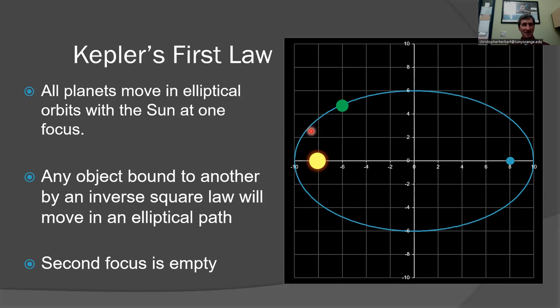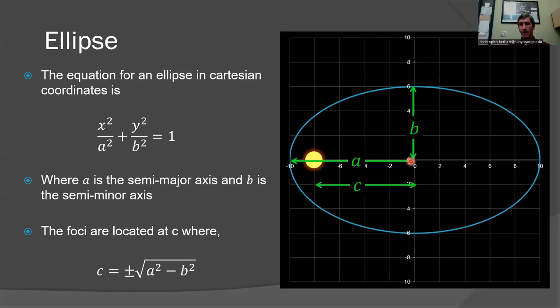So looking at an ellipse, if we break down an ellipse, A represents the semi-major axis. The major axis goes all the way from here to here, but this is the semi - it's half that major axis of A, the semi-major axis. B is the semi-minor axis. If we want to use an equation to describe an ellipse, we can use this equation right here, where we have X squared divided by A squared plus Y squared over B squared is equal to 1. That is the equation for ellipse in Cartesian coordinates.